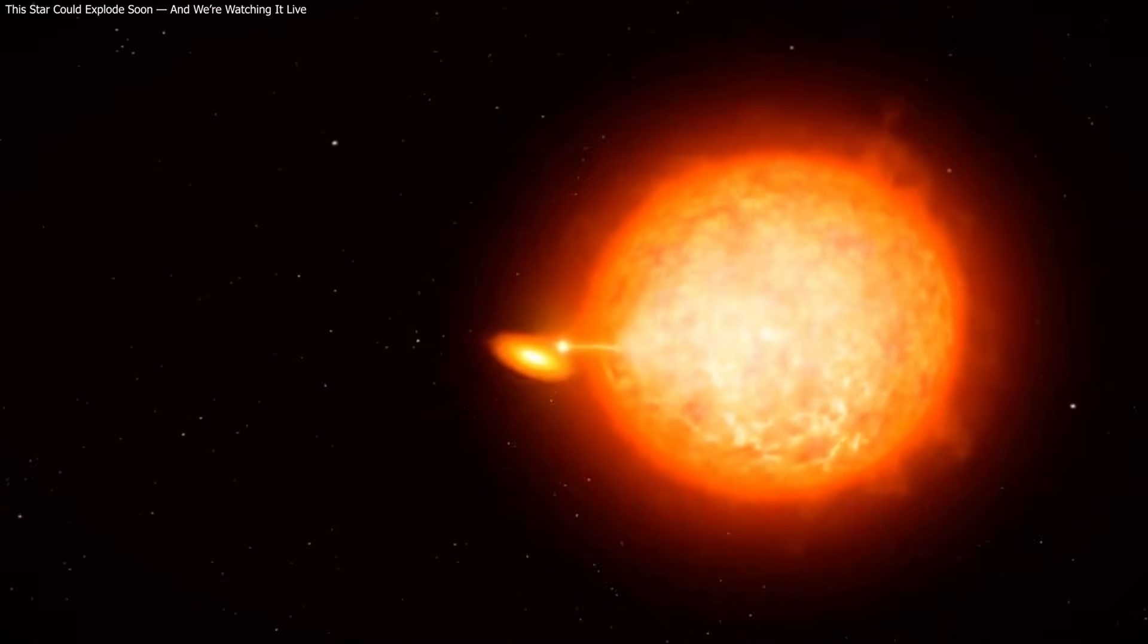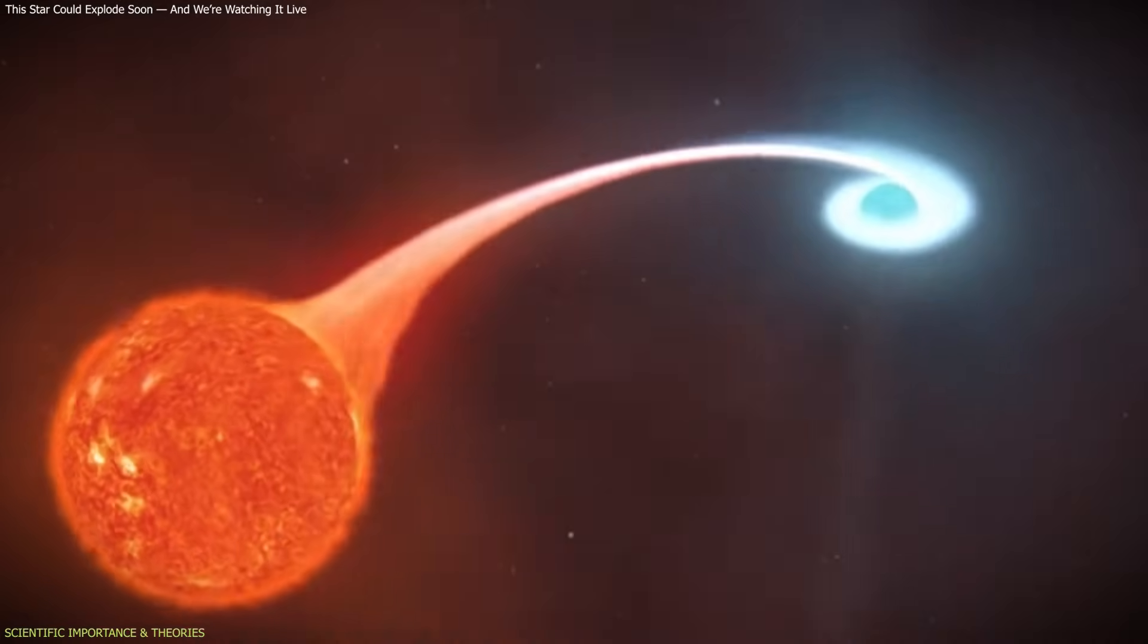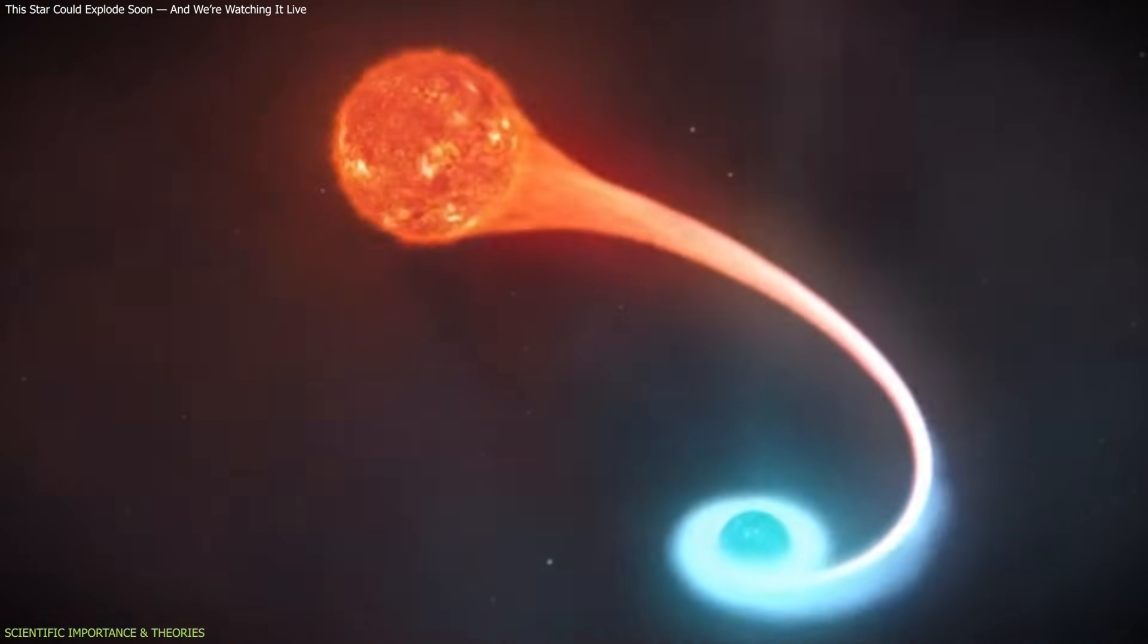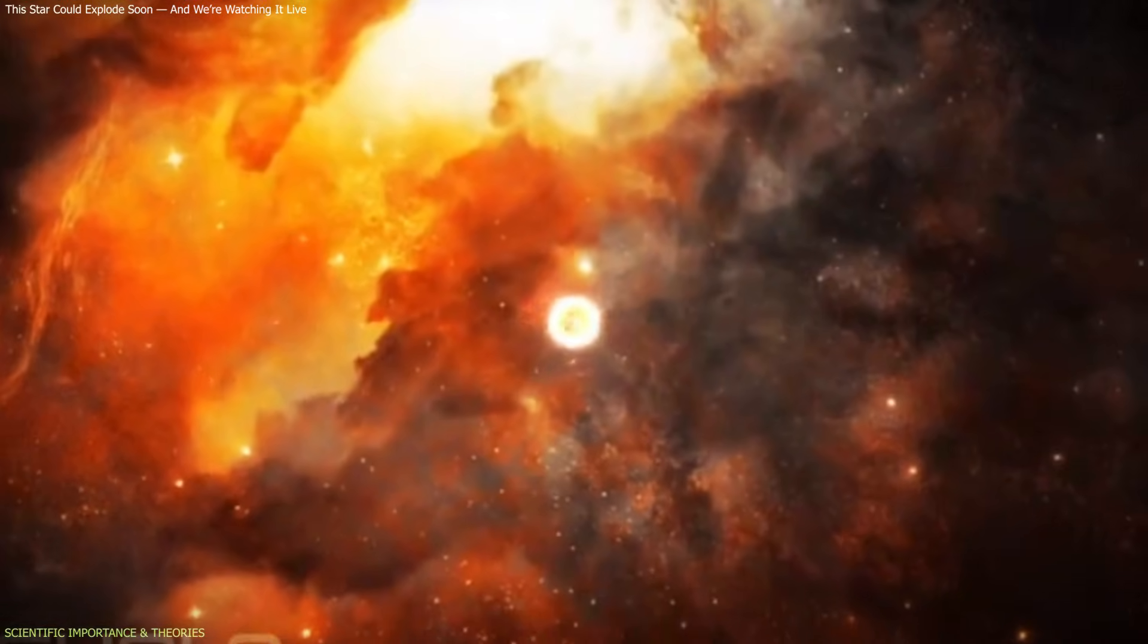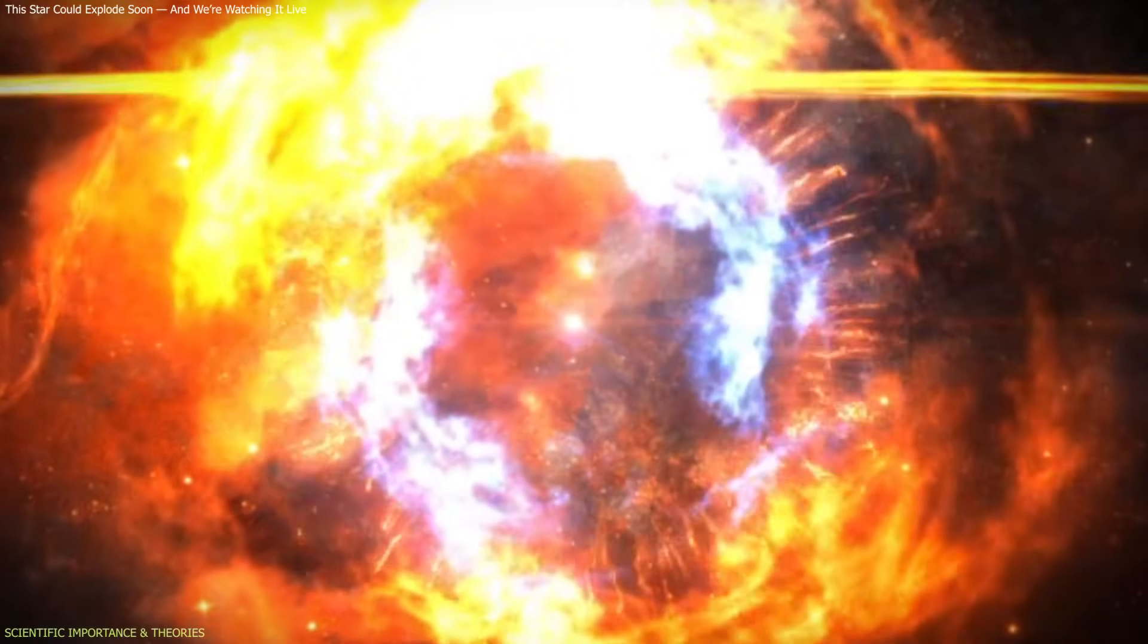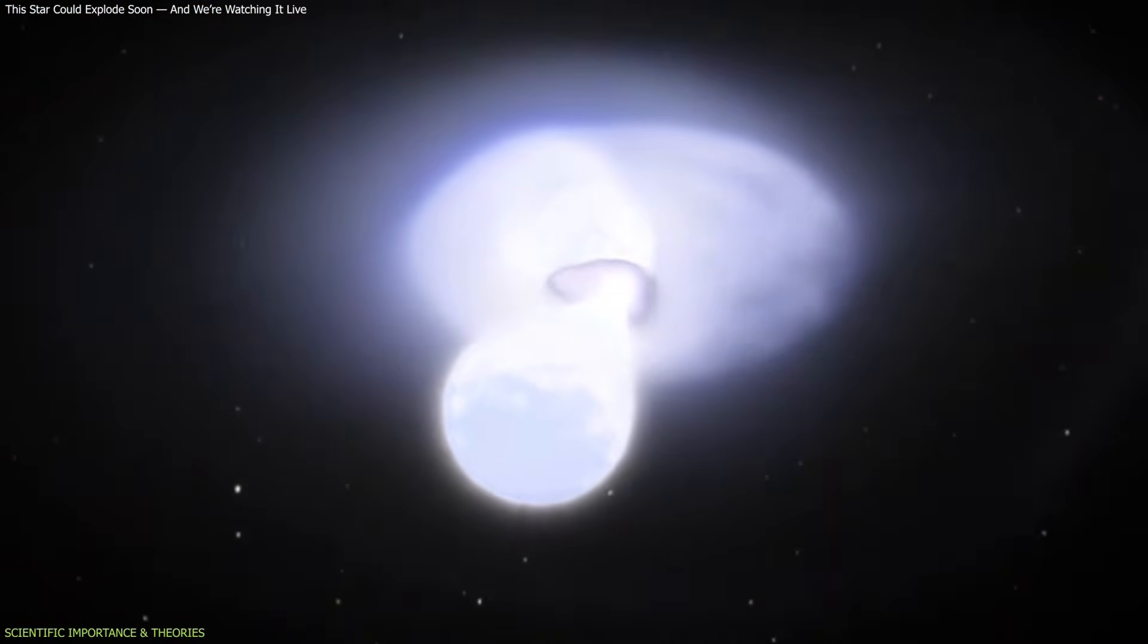The star system V Segatai is significant, not simply because it may erupt, but because it offers a rare view into how extreme binary systems evolve. These systems are thought to be among the pathways leading to some of the universe's most important stellar explosions. The most immediate scenario involves a classical nova. In this process, hydrogen builds up on the surface of the white dwarf until pressure and temperature reach runaway conditions. The resulting thermonuclear flash ejects material into space and dramatically increases luminosity, though the white dwarf itself survives.